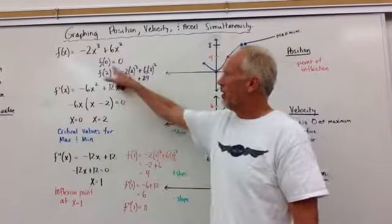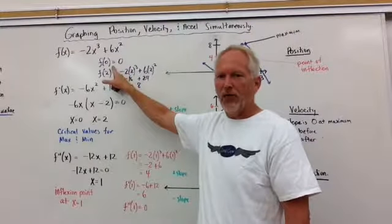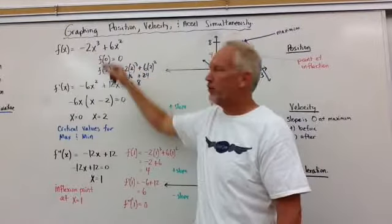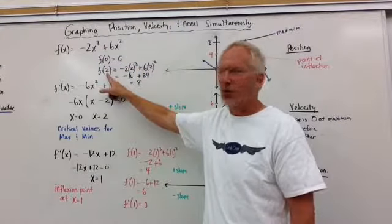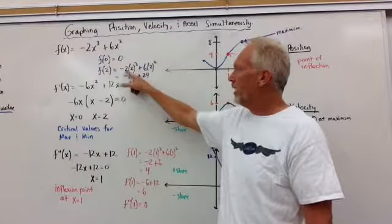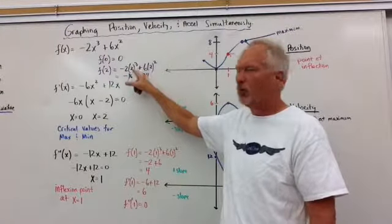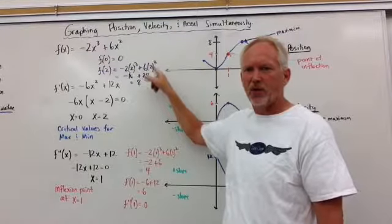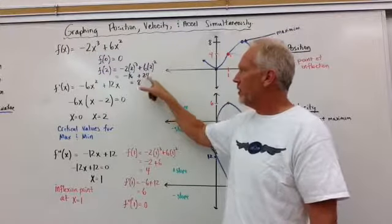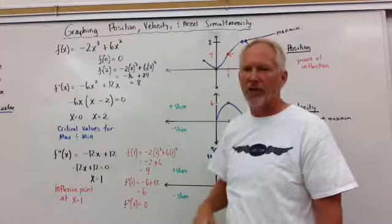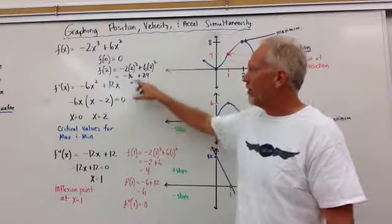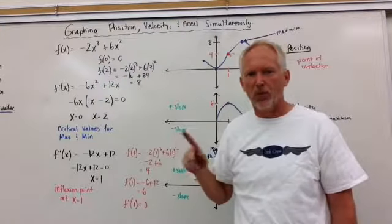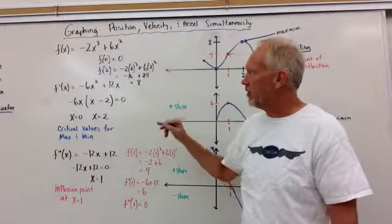And what we did here is we put the function values back in. So f(0) is just 0 if we replace x with 0. If we replace x with 2 to get our y value, we'll get negative 2 times 2 cubed plus 6 times 2 squared. We get negative 16 plus 24. We get a positive 8. So that gives us our y value, x and y, x and y of our two critical points of this function.